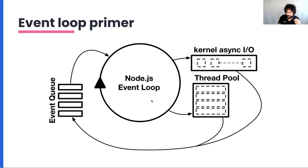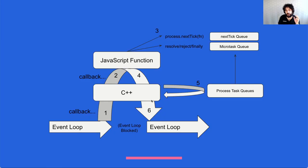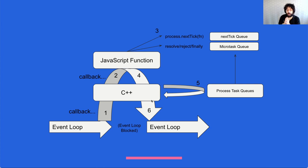How does this relate to pipelining? In order to make things fast in Node, you need to understand when the event loop is blocked. If you're doing massive IO, you want to maximize the time that Node.js is doing IO. This means minimizing the time the event loop is blocked. The event loop is blocked when we are executing JavaScript. In order to make things fast, we need to reduce the amount of time we spend in JavaScript down to zero if possible.